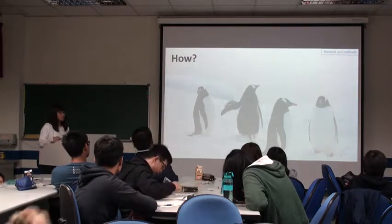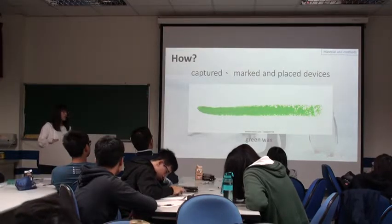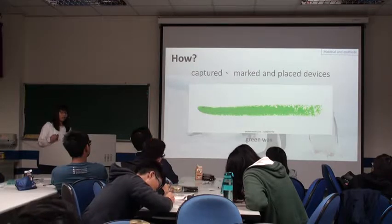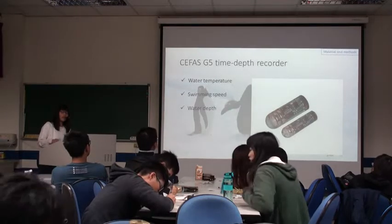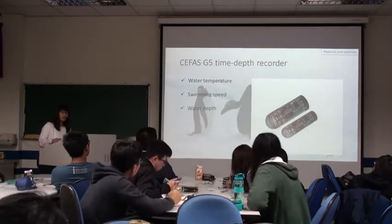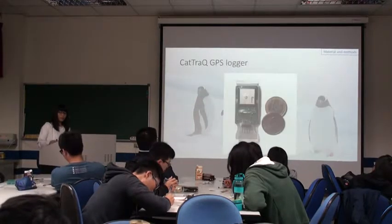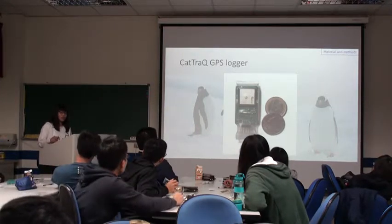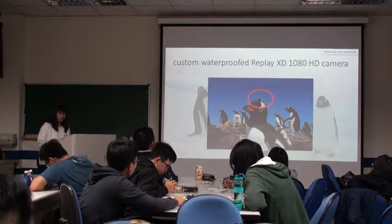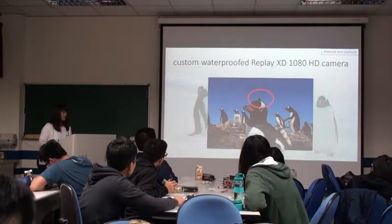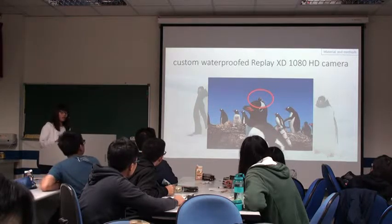How do we conduct this research? We capture the penguin and mount devices on them using temporary waterproof green wax. One of the devices is a time-depth recorder, which records the swimming speed, water temperature, and water depth. Another is a GPS logger so that we can know where the penguin went. The other is a custom-made waterproof camera, so that we can record the behaviour between the penguin and its prey.